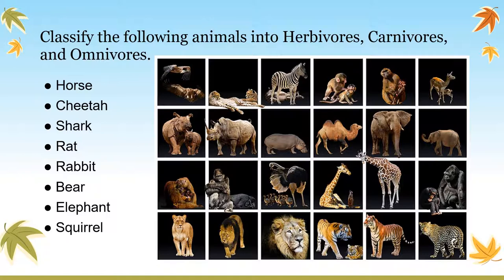Rabbit is a herbivore animal as it eats small fruits, grass, and leaves. Bear is an omnivore animal as it eats insects, fishes, fruits, and grass. Elephant is a herbivore animal as it eats fruits and other plant-based food. Squirrel mostly eats nuts, but sometimes feeds on small insects, so it is an omnivore animal.